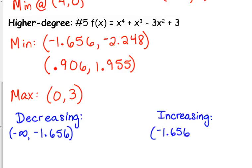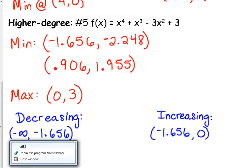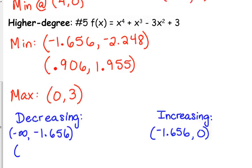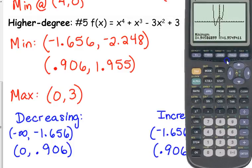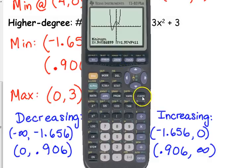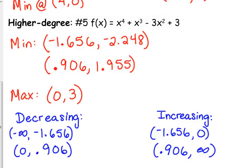Then I start decreasing again. I decrease from 0 to that second minimum, 0.906, and then from that second minimum on, my function is increasing. Everything will change. We decrease, we increase, we decrease, and we increase. We've got four intervals, but it covers our entire domain. It goes from negative infinity all the way to positive infinity.